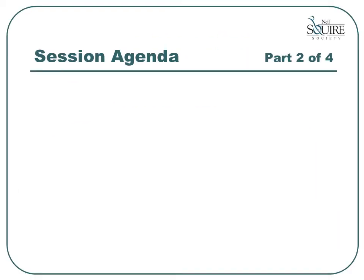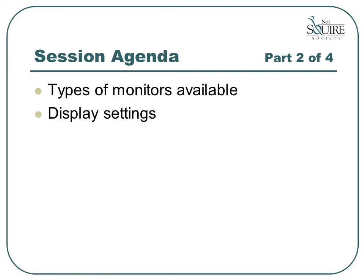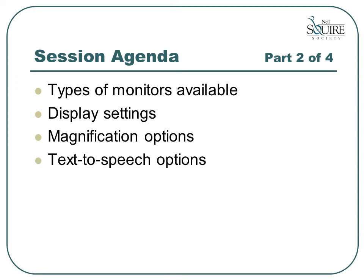This presentation is an overview of some of the assistive technology available for people with vision issues or impairments. The following topics will be covered: types of monitors available on the market today, display settings for your monitor, magnification options available, text-to-speech options available, and Braille displays. Additional information regarding the specifics of adjusting your monitor will be provided in a future session discussing eye strain solutions.